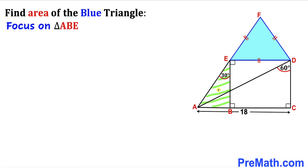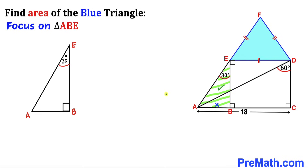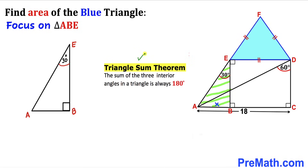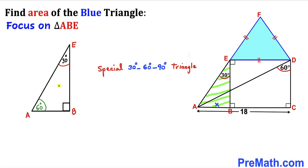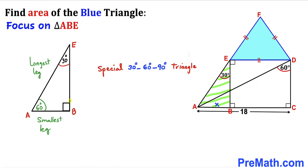Let's focus on right triangle ABE and label side length AB as X units. Now let's recall the triangle sum theorem: the sum of three interior angles in a triangle is always 180 degrees. We know this is a 90-degree angle and this is a 30-degree angle, so therefore this angle has got to be 60 degrees. We can see this is a special 30-60-90 triangle. The side opposite the 30-degree angle is the smallest leg, and the side opposite the 90-degree angle is the hypotenuse, our longest leg.